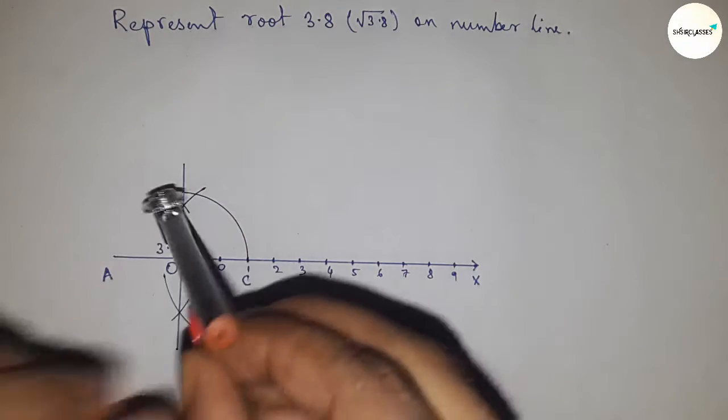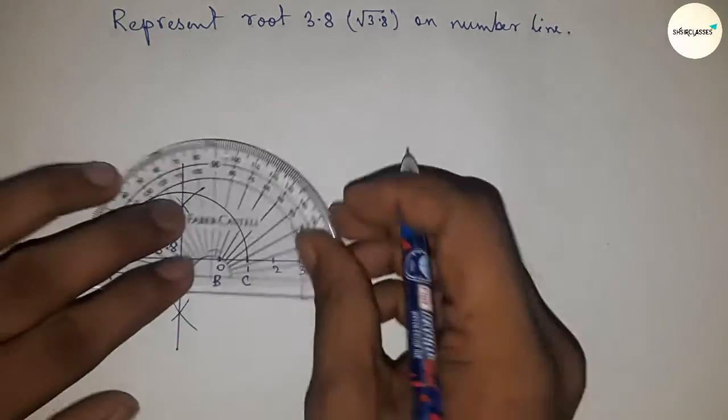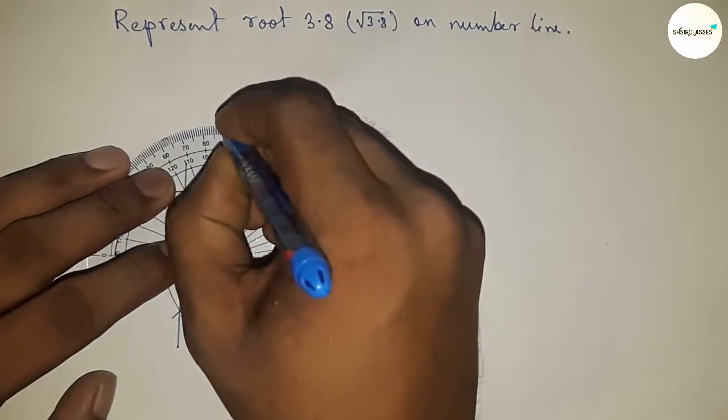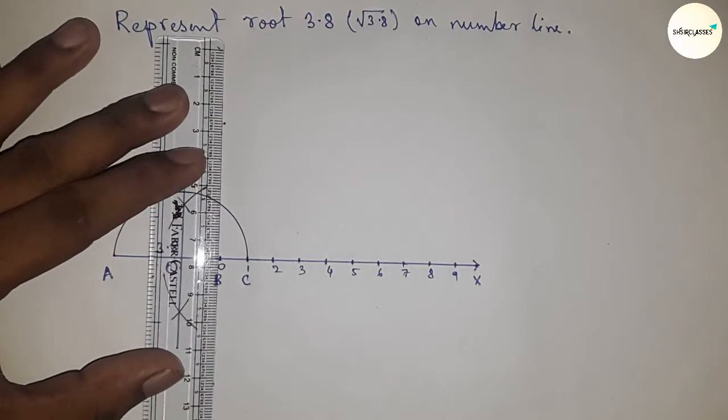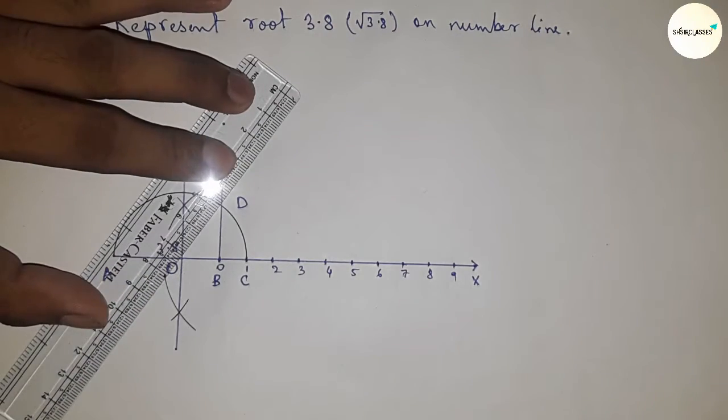Next, draw a 90-degree angle at point B using a protractor. Join this line, which meets the semicircle at point D. Now join O and D.